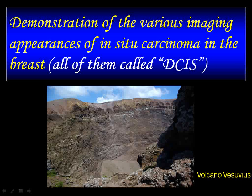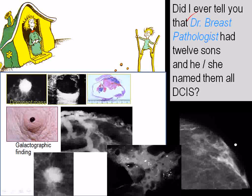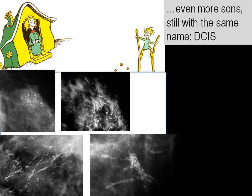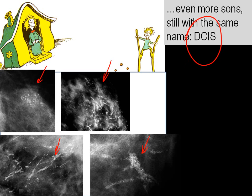Why was I happy about this? Because I thought, I'm going to rewrite this book. Have I ever told you that Dr. Briss's pathologist had 12 sons? One looks like this — no calcium, intracystic papillary carcinoma in situ. Another: no calcification but bloody nipple discharge. The third: architectural distortion. Others: some calcium, again architectural distortion. Dear colleagues, who finds in situ carcinoma? You and I, the radiologists. We have at least 12 different mammographic appearances of this disease, but all of them get one name: DCIS.